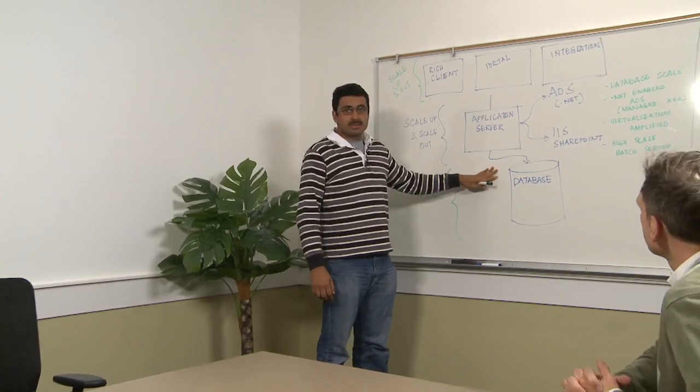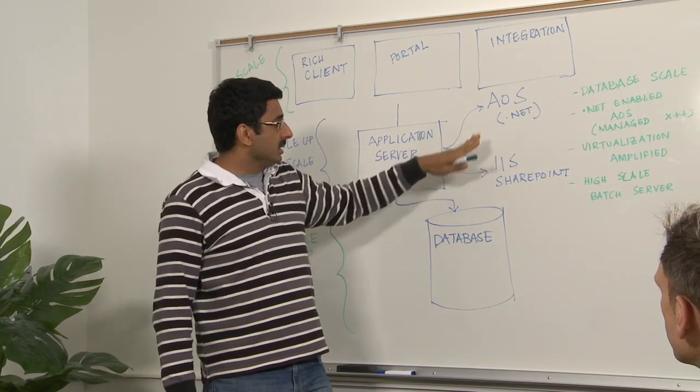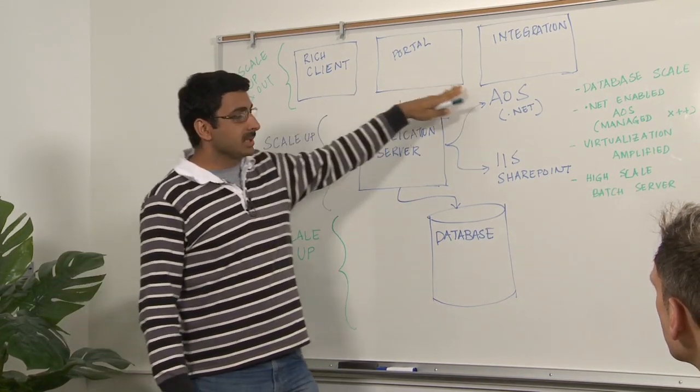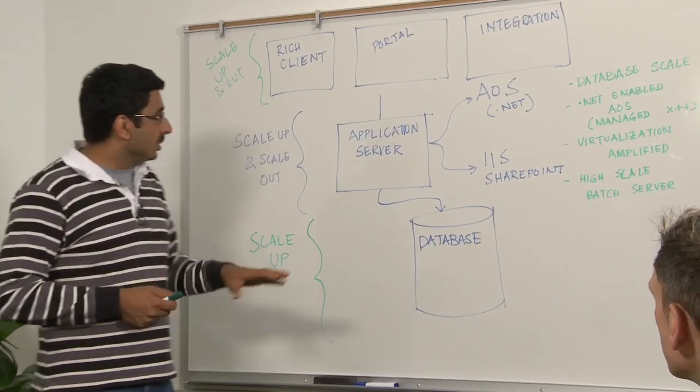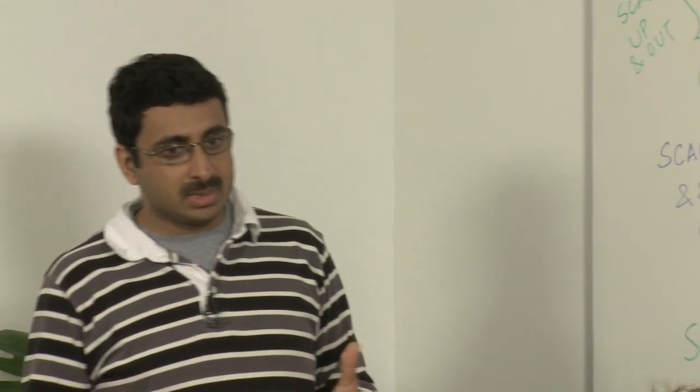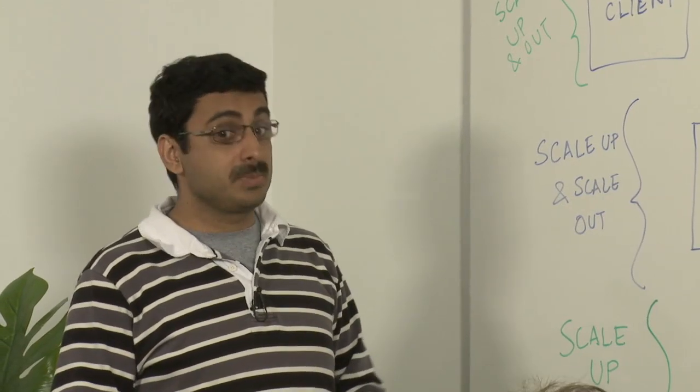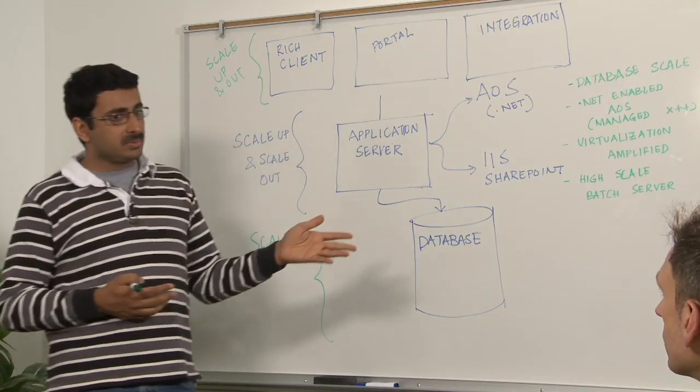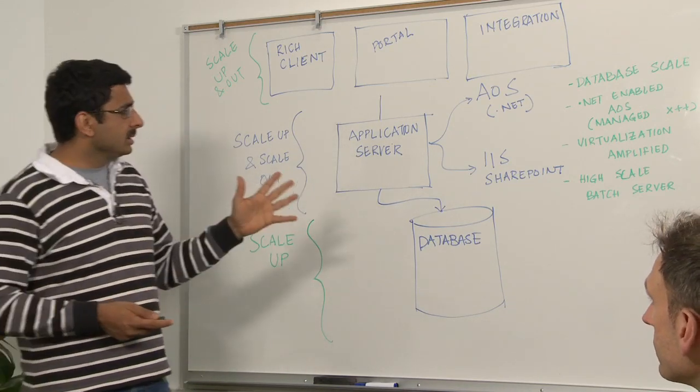So in any architecture, you've got the database at the lowest end of the tier. And then you've got a set of application servers. In this case, the AOS and the IIS server. And we have a number of client forms, rich clients, portals, integration clients that help us scale. In AX 2012, what we did is we focused our energies on the application server and taking our unmanaged X++ language and helping it run on .NET. So X++ is now a managed language. And with a managed language, we get speed. So we've clocked X++ to be 20 times faster in certain cases. It can be as much as two times faster to 20 times faster in AX 2012 versus the previous versions.